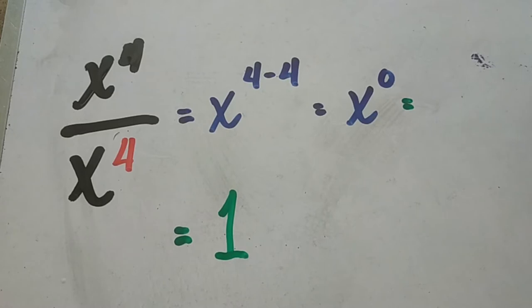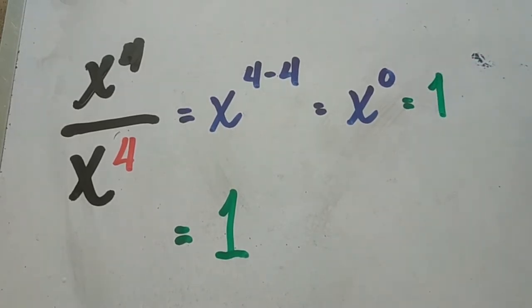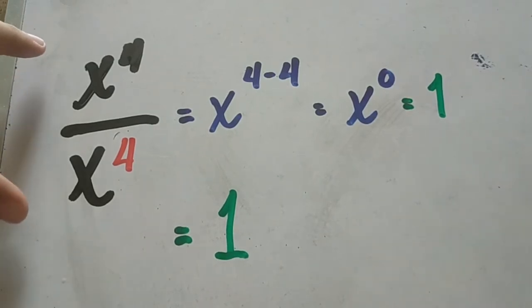Therefore, if any number is raised to 0, then the answer is always equal to 1. So the zero exponent rule is like dividing a number by itself. That's why we always get 1.